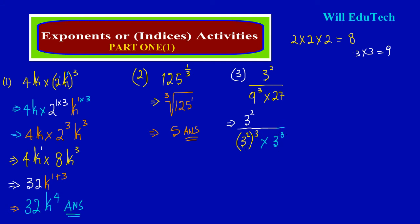From earlier lessons working with indices: in the numerator I have 3 squared, and I'm going to rewrite my 3 squared. In the denominator, the power-to-power rule comes in — I'm multiplying out the powers: 2 times 3 gives me 6, so I would have 3 to the sixth power. And that is multiplying 3 to the third power.